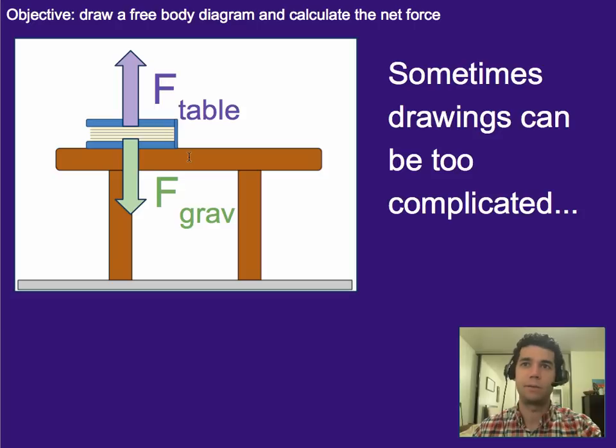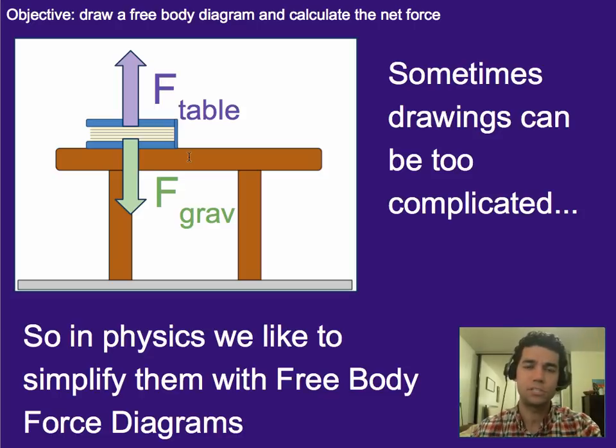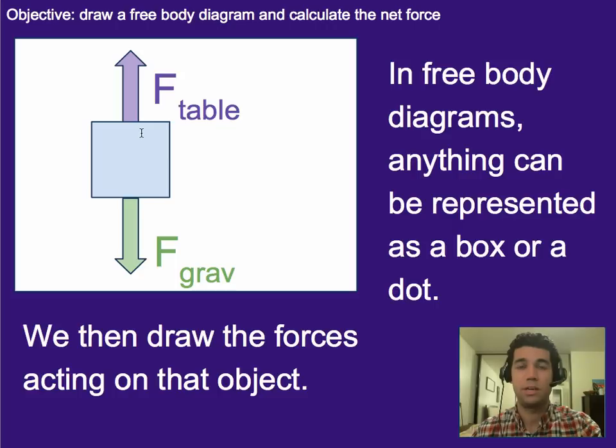So that brings us to free body diagrams. In physics, we often simplify a drawing of something to just a box or a dot. So we can represent the book, which is really what's important here, simply just as a box or a dot. In this case, we've got a box. So in free body diagrams, again, anything can be represented as a box or a dot. In this way, it becomes super simple to represent the forces on something and to draw it without having to spend tons of time drawing.